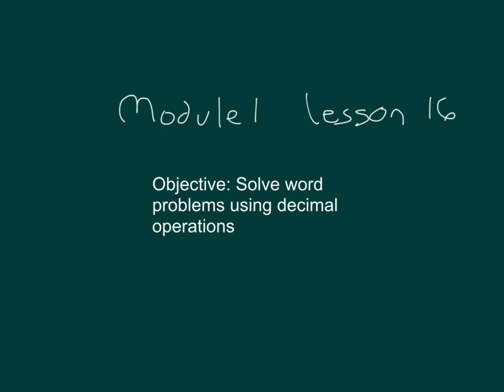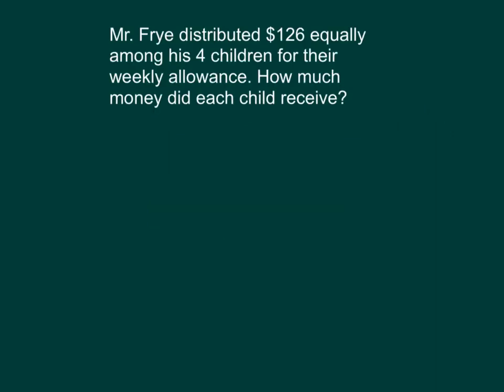Within this lesson, we will solve word problems using decimal operations. Let's take a moment to read this problem together. Mr. Fry distributed $126 equally among his four children for their weekly allowance. How much money did each child receive?